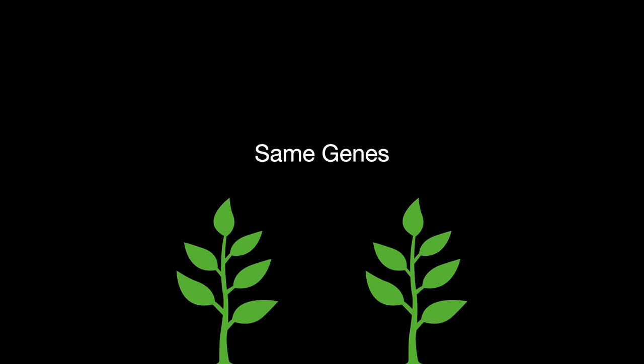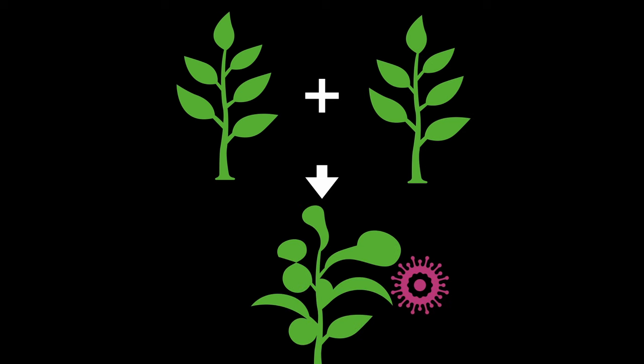Another disadvantage is inbreeding. Gene diversity starts to narrow down with selective breeding, and when two parent plants of similar genes breed, inbreeding could occur and cause the offspring to be prone to diseases and inherit unappealing defects.